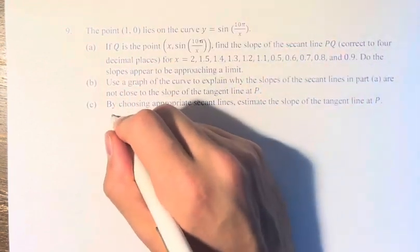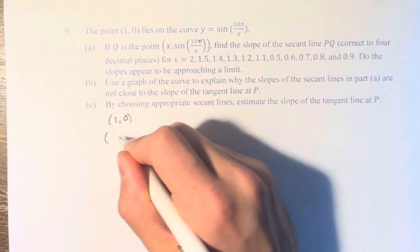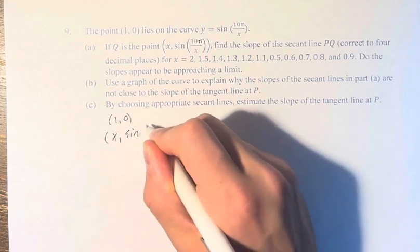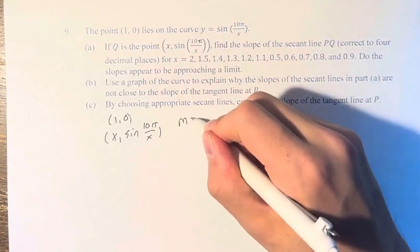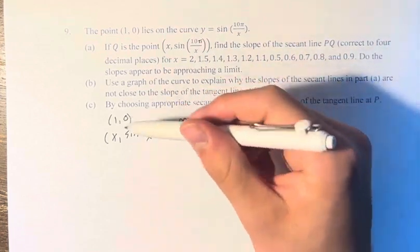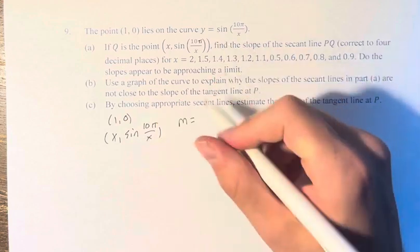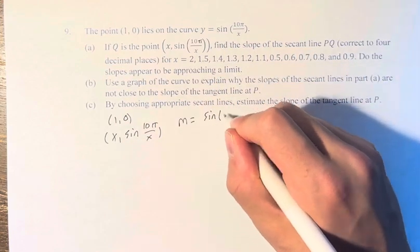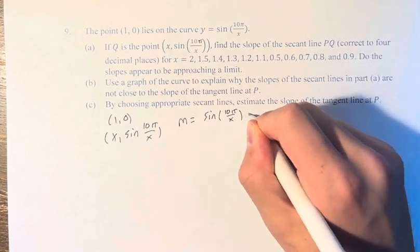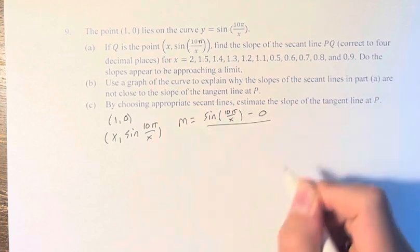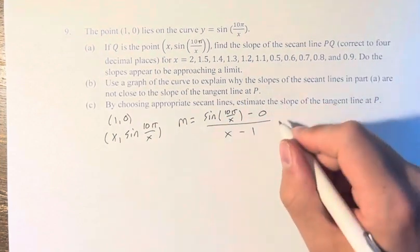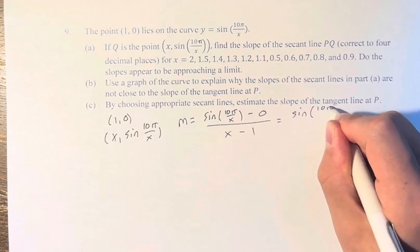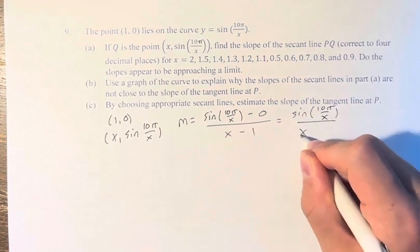So if we have these two points (1,0) and (x, sin(10π/x)), we have to find the slope of this line. The slope is the change in y, so sin(10π/x) minus 0, over the change in x, x minus 1. This is also just sin(10π/x) over x minus 1.